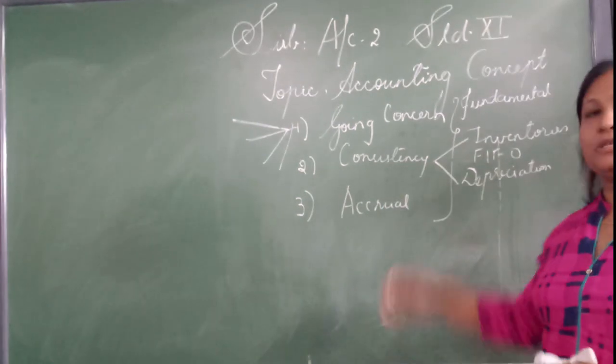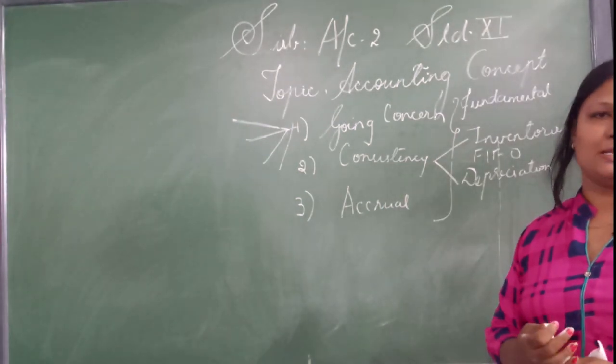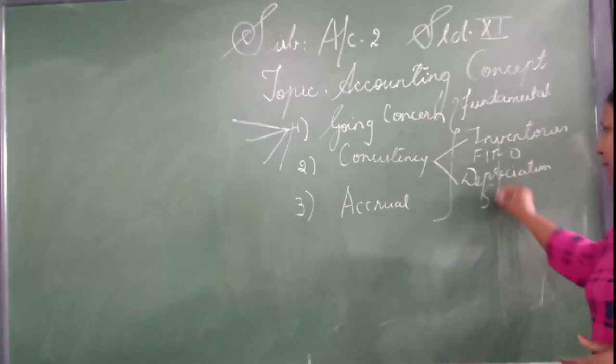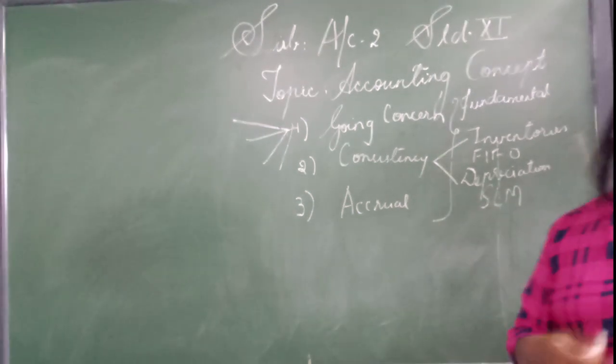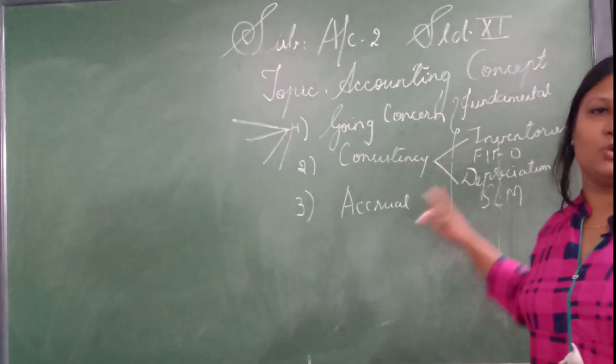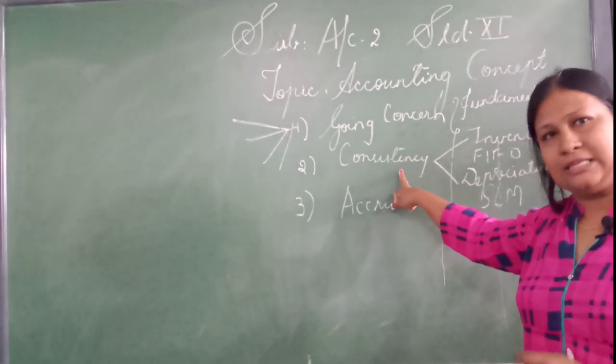Same way for depreciation, we have ten methods available. Out of that, suppose I am using SLM, I am using straight line method. So every year for the same asset I have to use SLM. This is called consistency concept.